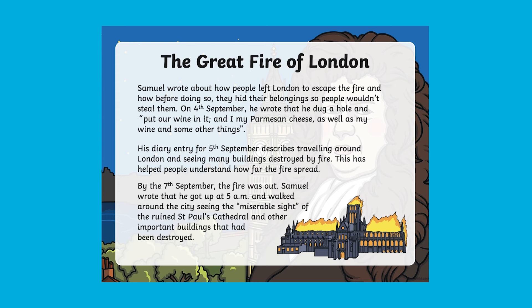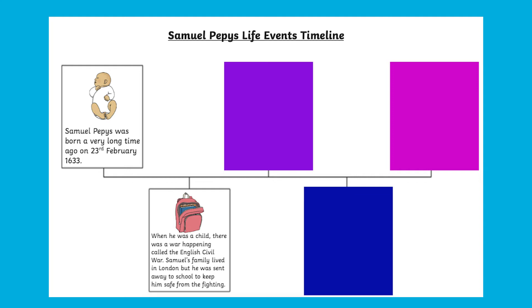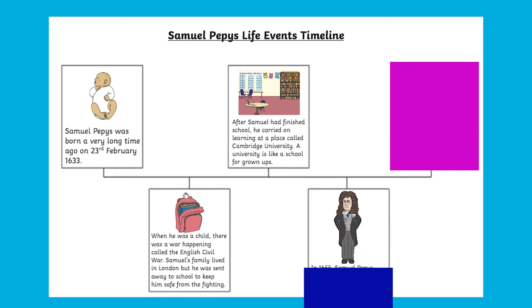One of the ways that you can use this resource is to use the information in the PowerPoint to prompt your child's writing. Can your child use the information from the PowerPoint to create a detailed timeline about Samuel Pepys' life events? This is also a great way to assess the learning that has taken place in the topic.